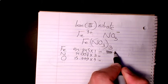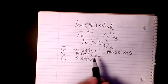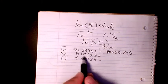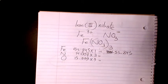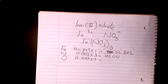Then I need to multiply. This is gonna be 55.845. Then we have 14.007 times three which is 42.021. And then 15.9999 times nine, that will make it as 143.991.